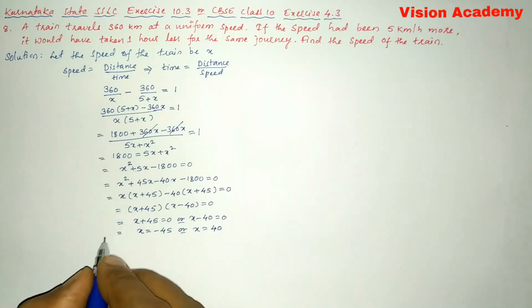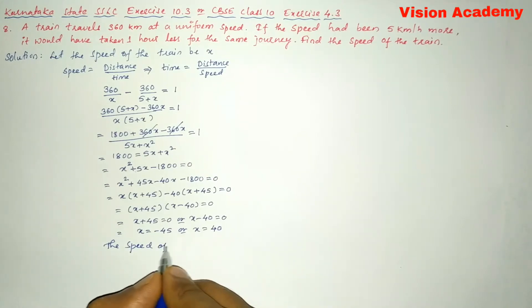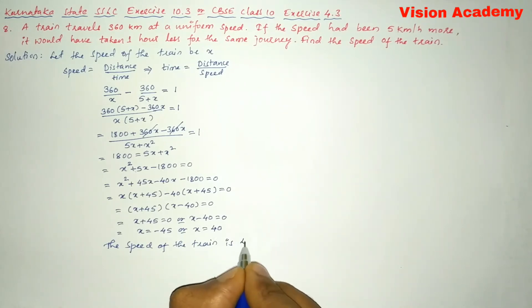So here we can say the speed of the train is 40 kilometer per hour.